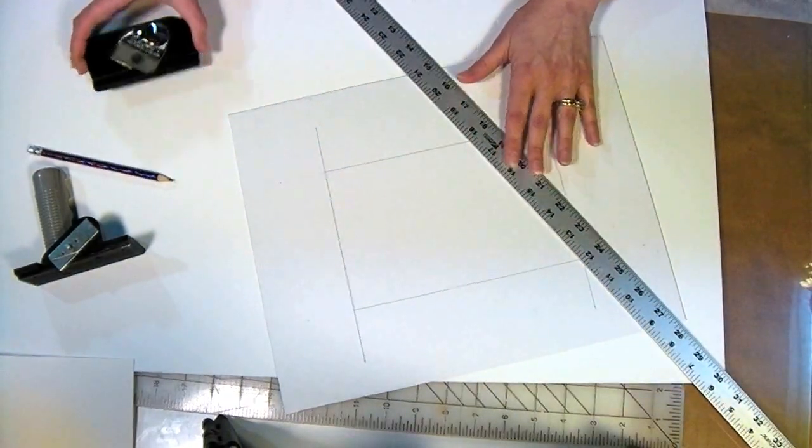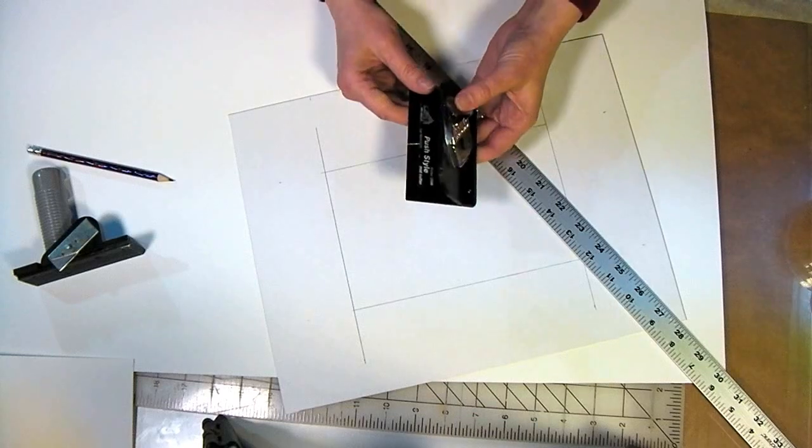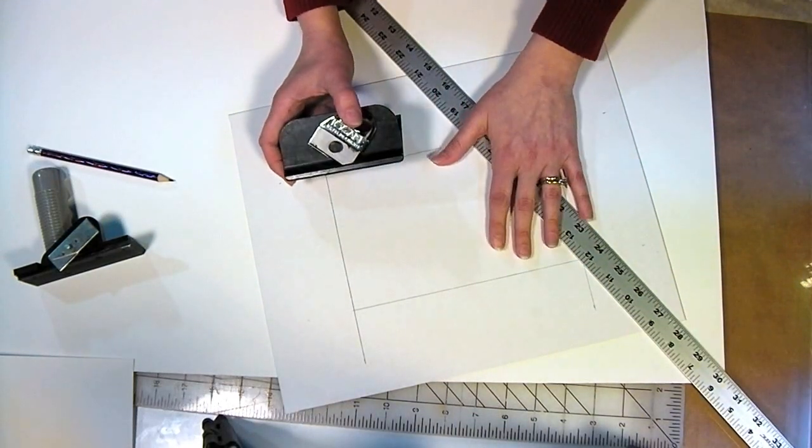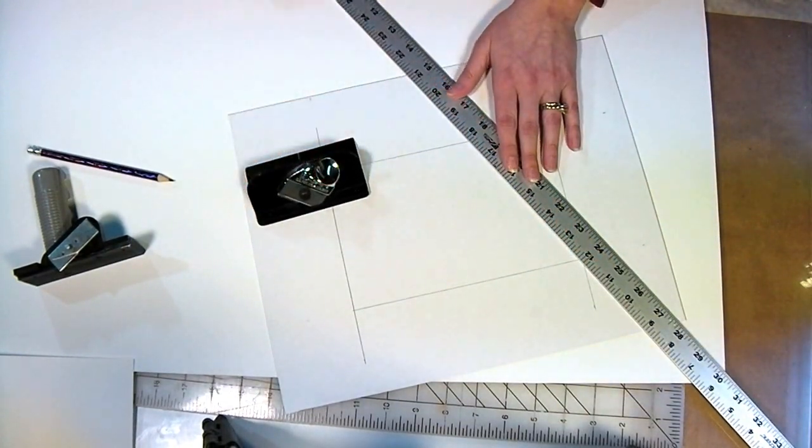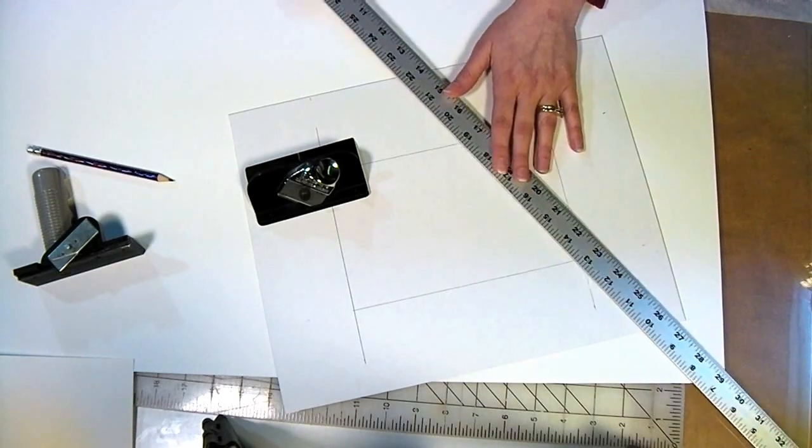Here are the supplies you're going to need. This is a Push Style Logan Cutter Model 2000. I've had this for about 15 years, and that's how you get a nice beveled edge cut. You'll need a metal straight edge. This came from the hardware store. It's Master Mechanic brand, but any brand will work.